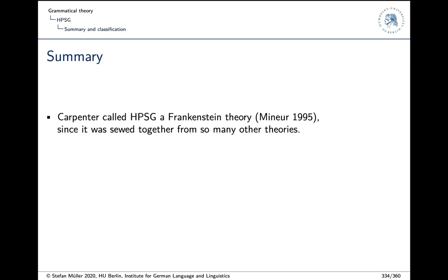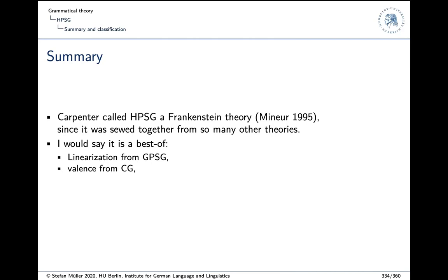To sum up: Carpenter once called HPSG a Frankenstein theory in an interview since it was sewn together from so many other theories, but I would call it a best-of theory. We have linearization rules from GPSG, the separation between immediate dominance and linear precedence, valence from categorial grammar, verb placement for German from government and binding, and construction patterns from construction grammar.